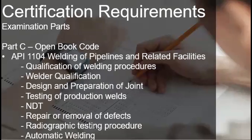API 1104 is another option. Just a note, I personally took this code when I sat for the exam. This is the shortest standard out of any code or standard I will mention. API 1104 focuses on qualification of welding procedures, welder qualification, design and preparation of joints, testing of production welds, NDT, repair or removal of defects, radiographic testing procedure, and automatic welding.